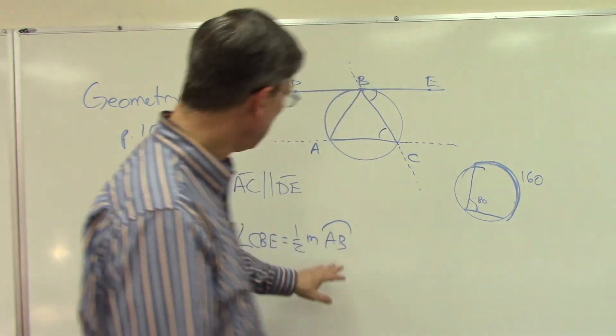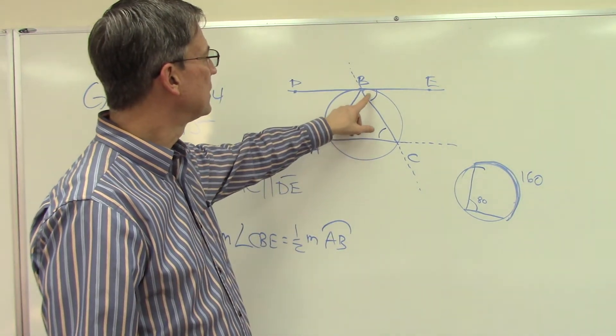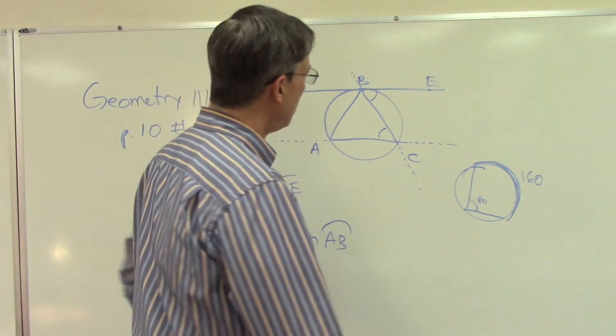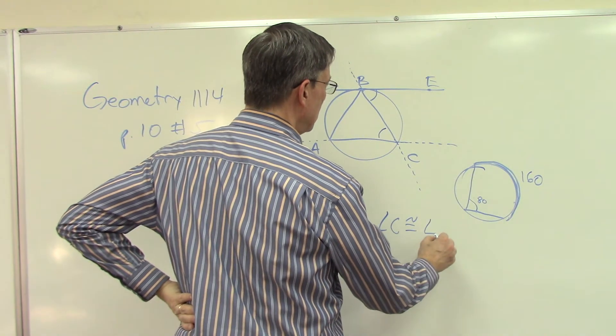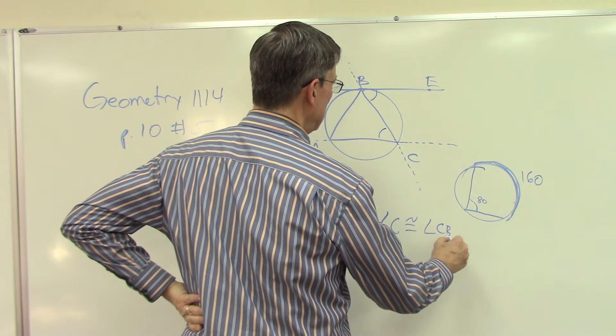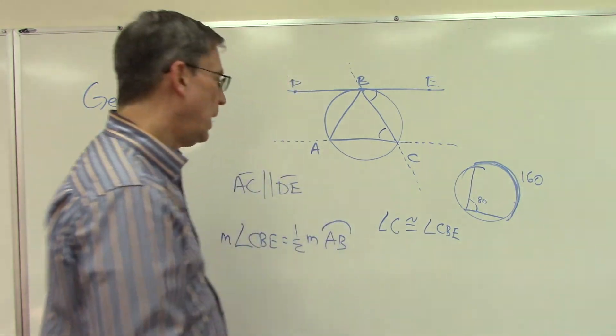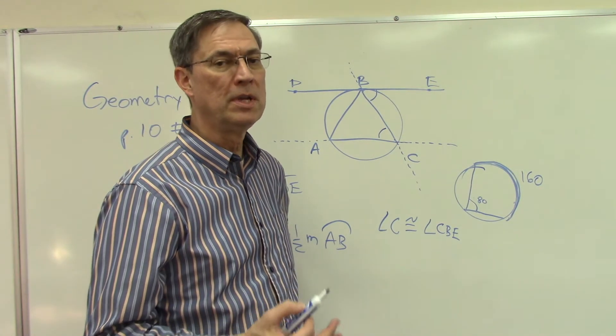Sorry. All right, yeah. Now, this is kind of tricky. And we did this way back in one of the first paces as well. We can say that angle C is congruent to angle, what do we call this, CBE. Okay? They're congruent.